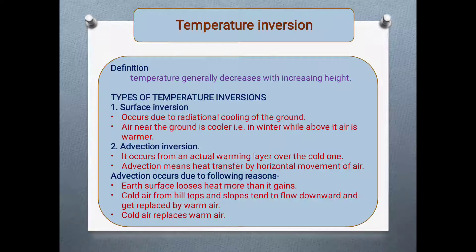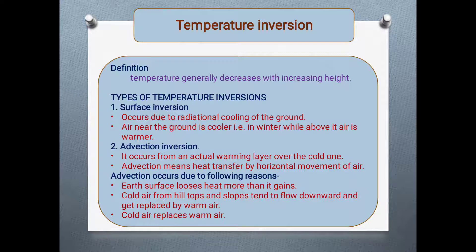Advection inversion occurs due to the following reasons: first, the earth's surface loses heat more than it gains. Second, cold air from hilltops and slopes tends to flow downward and gets replaced by warm air. Third, the cold air replaces the warm air. So the two types of temperature inversion are surface inversion and advection inversion.